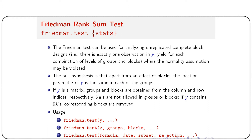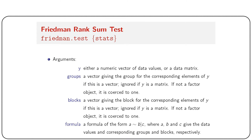The arguments are: y, either a numeric vector or data matrix; groups, a vector giving the group for each element of y (ignored if y is a matrix, coerced to factor if not already); blocks, a vector giving the block for each element of y (also ignored if y is a matrix). The formula structure is y ~ b | c where c is the block variable.